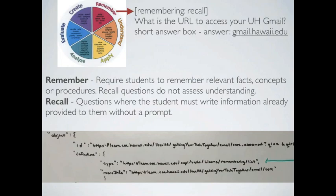Here's a quick example. We have a question on one of our quizzes: 'What is the URL to access your UH University Hawaii Gmail?' We have a short answer box; the answer is gmail.hawaii.edu. We're labeling this 'remembering' and 'recall.' The definition we're working with is requiring students to remember facts, concepts, or procedures. We don't assess their ability to understand why they go to gmail.hawaii.edu, only that they can remember that's the place to go. The specific subtype is recall — questions where students are prompted to write information without any prompt like a list of options. We just wanted to pluck it out of their brain.